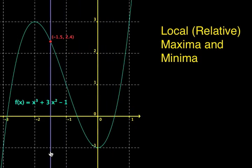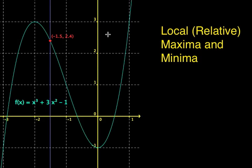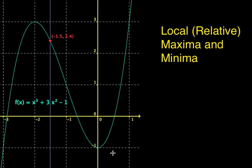One point to be clear about: this local hilltop does not mean that this is the highest point on the entire function. The function obviously increases to positive infinity, but it is a local maximum — it is the highest point in this region of the graph. Same thing with this valley: it is the smallest point in its region, even though to the left the function slopes down to negative infinity.